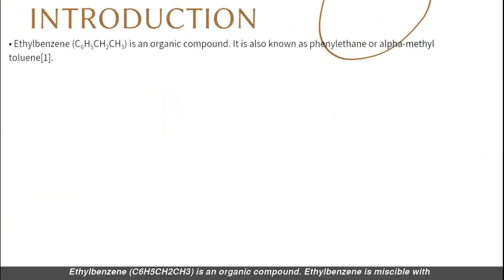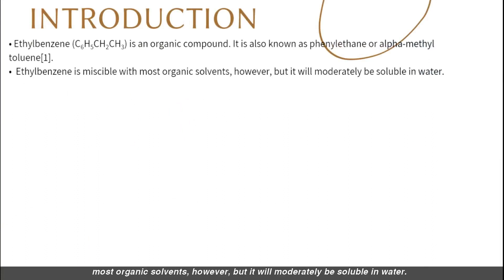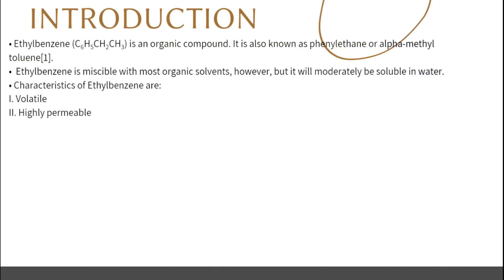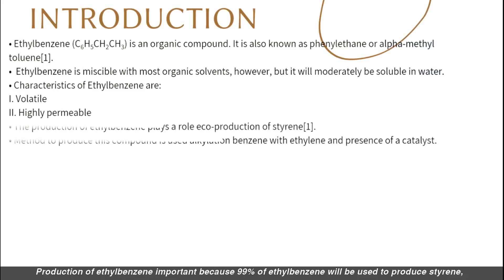Ethyl benzene (C6H5CH2CH3) is an organic compound. It is miscible with most organic solvents but only moderately soluble in water. Ethyl benzene is volatile and highly permeable because its flashpoint is between 19 and 23 degrees Celsius.